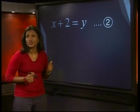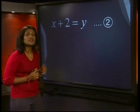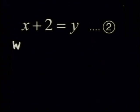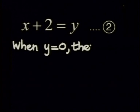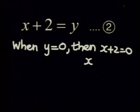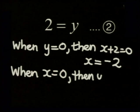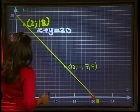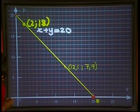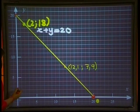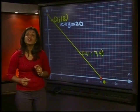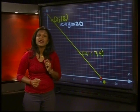Let's draw the graph of the second equation, X plus 2 equals Y. First we find the intercepts on the axes. The Y intercept is 2. I can plot these points: the point (negative 2, 0) on the X axis and the point (0, 2) on the Y axis. Again, I can join the points with a straight line because we have a linear equation.